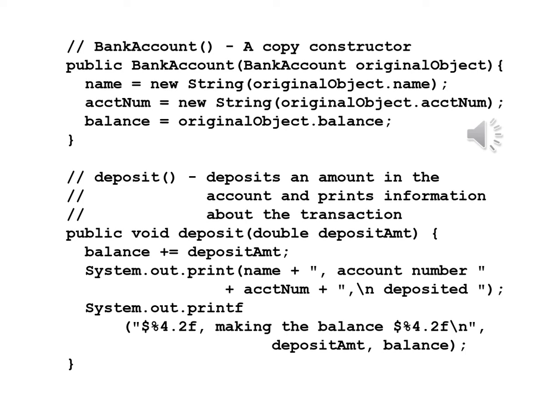We'll also handle now the deposit method. Public void deposit, double depositAmount: balance += depositAmount, adding that amount to the balance. System.out.print prints name, account number, and then a comma and new line with "deposited". We're still on the line, and then we'll use formatted printing — System.out.printf with "$%4.2f" to format the deposit amount, and "making the balance $%4.2f", backslash n for new line, filling in depositAmount and balance.